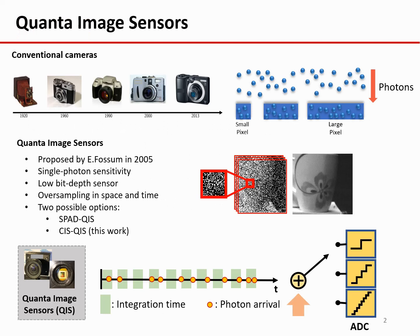From photographic film to CMOS sensors, camera technology has experienced several changes over the past century. Cameras today are required to have higher resolution and smaller pixels, which limit the sensing area of the sensor. As the size decreases, fewer photons will arrive at the sensor, so there exists an intrinsic limitation on the SNR the sensors can achieve.